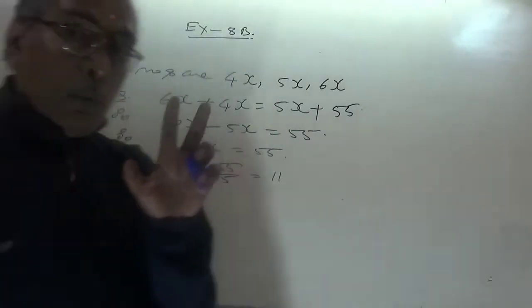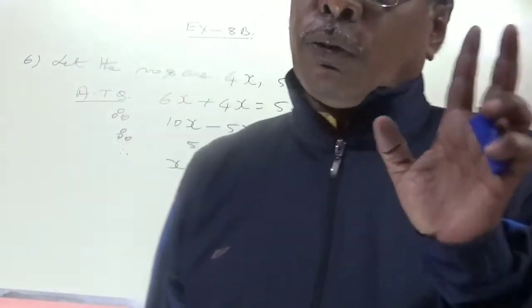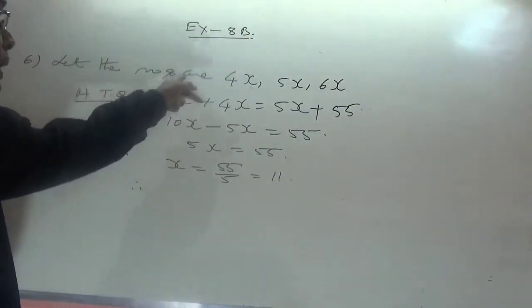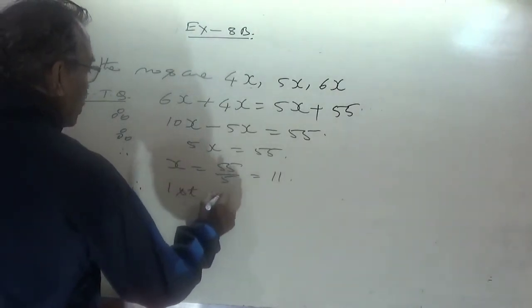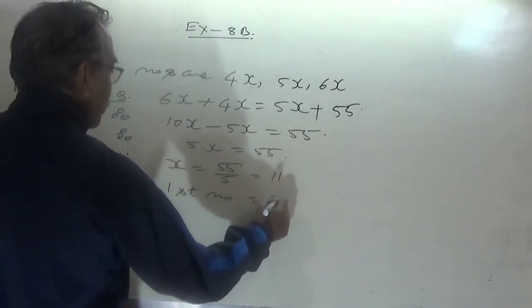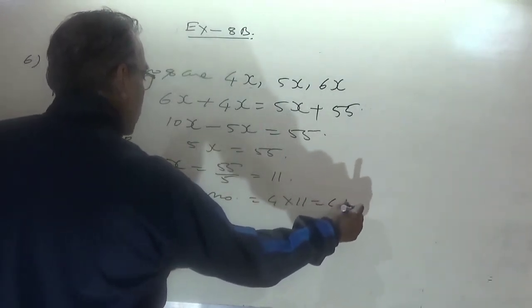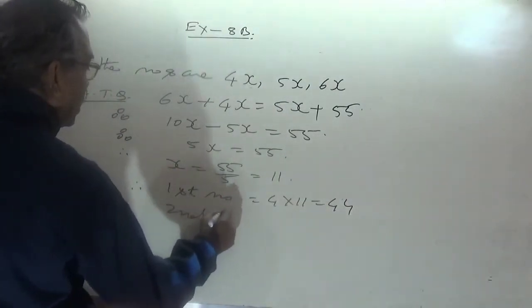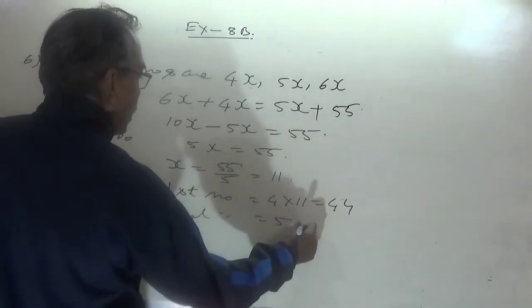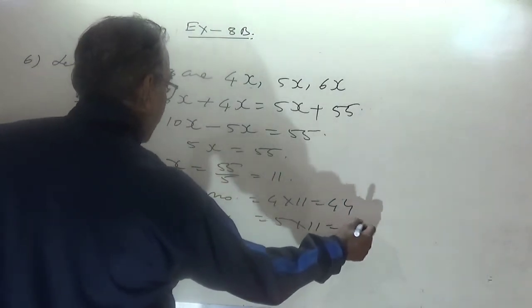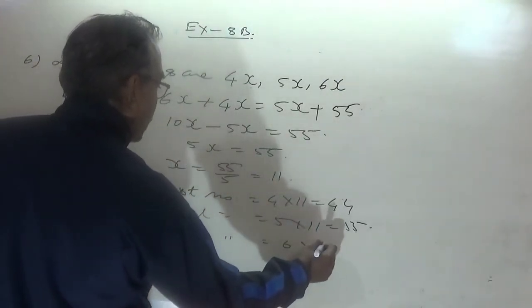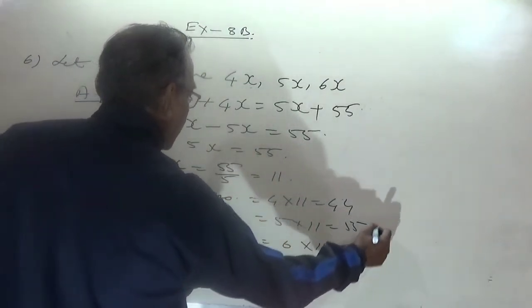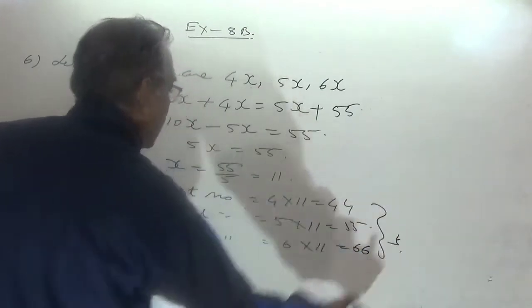Solving: x = 55 ÷ 5 = 11. Therefore the three numbers are: first number = 4 × 11 = 44, second number = 5 × 11 = 55, and third number = 6 × 11 = 66.